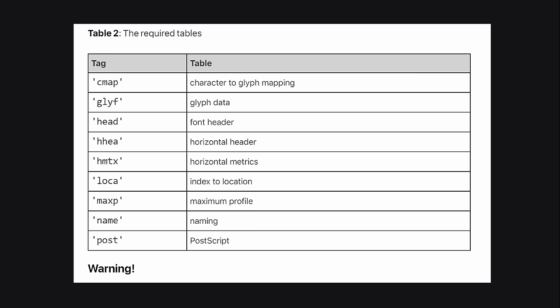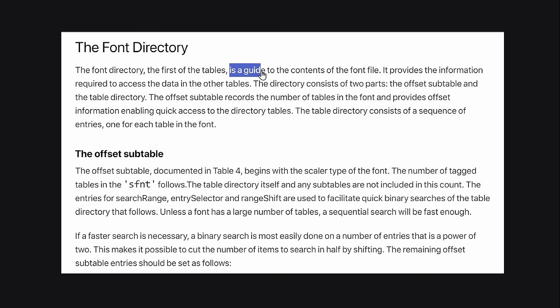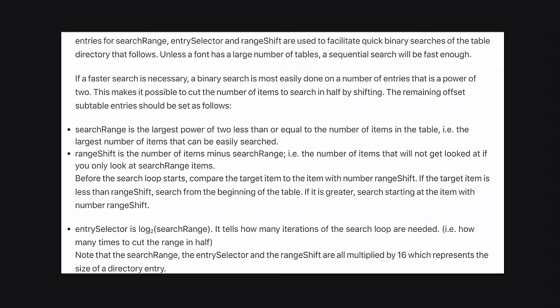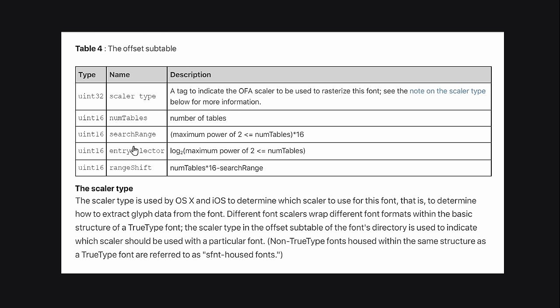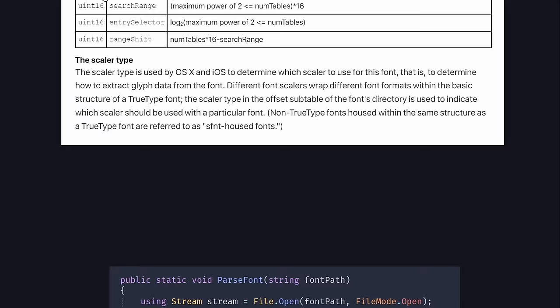Let's move on to the next section of the manual, which gives us a list of mandatory tables that all fonts need to include. I'm most excited about the glyph table, since that sounds like where the shapes are stored, so our first goal is simply to locate that table. The font directory is a guide to the contents of the font file — this is the very first block of data we'll encounter. We don't really care about most of it except for the number of tables, so we skip over one 32-bit integer and read in a 16-bit integer.